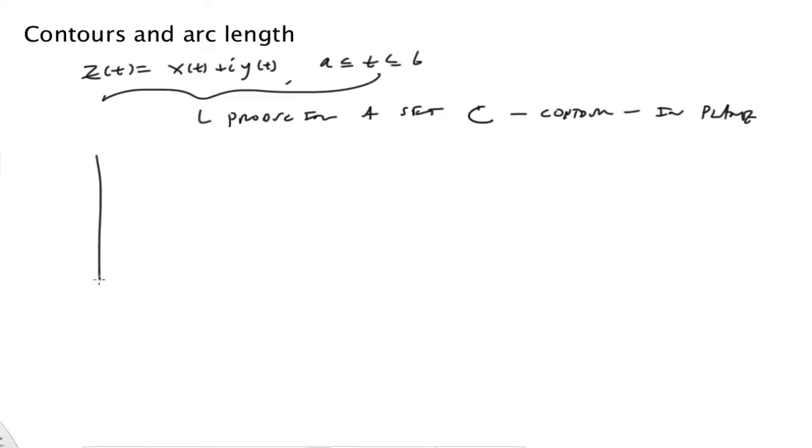For instance we'll have some, here's the complex plane, we have some point at t equals a, and it goes like that or something all the way to t equals b. And that's a contour in the plane, some sort of set like that.